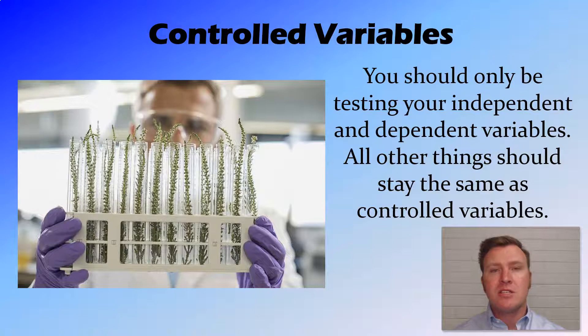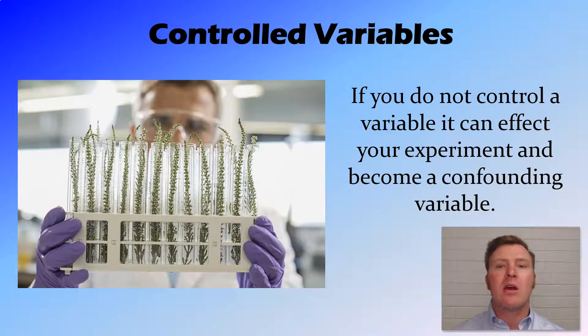If these things don't stay the same, they're going to interfere with your data that you're collecting on your dependent variable. And they're going to be turning up as what we call confounding variables. So these are variables that you haven't controlled that are going to basically make your results not representative of the independent variable that you set out to test in your aim.